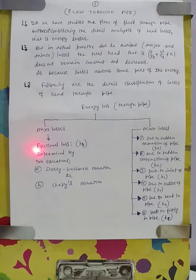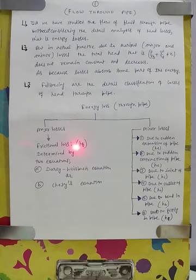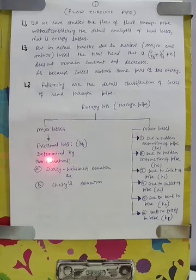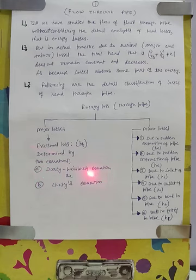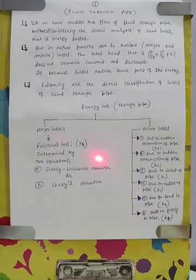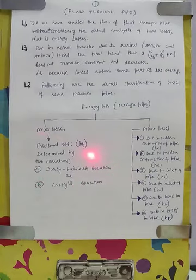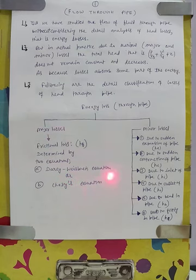Basically, major loss is the frictional loss. It is indicated by h subscript f, and this frictional loss is determined by two equations. It may be determined by either the Darcy equation or it may be determined by the Chezy equation. The derivation of both these equations we will see in next classes. So these are the major losses in the pipe.